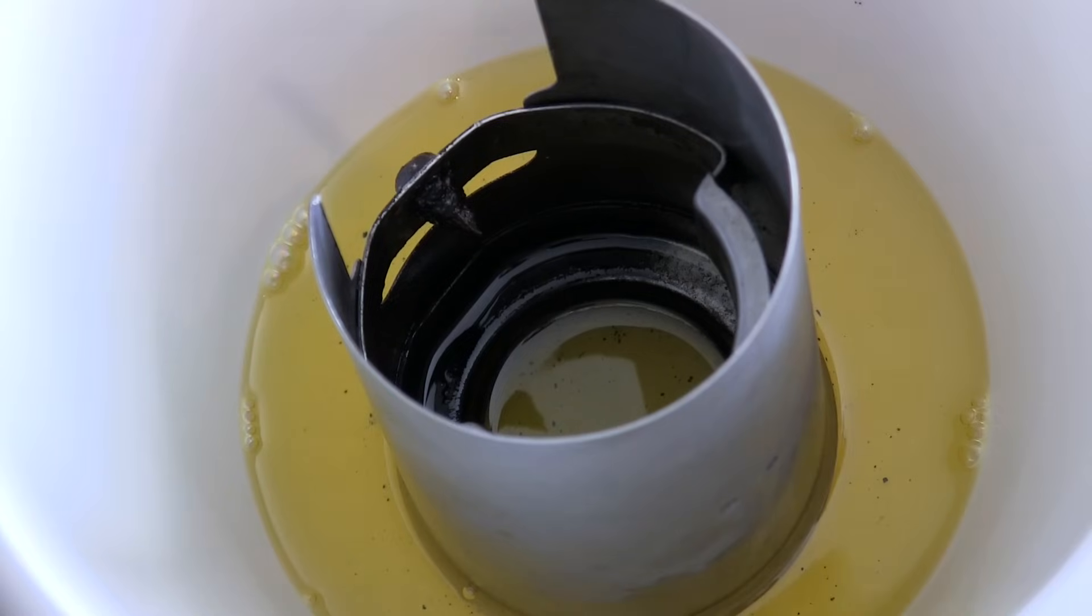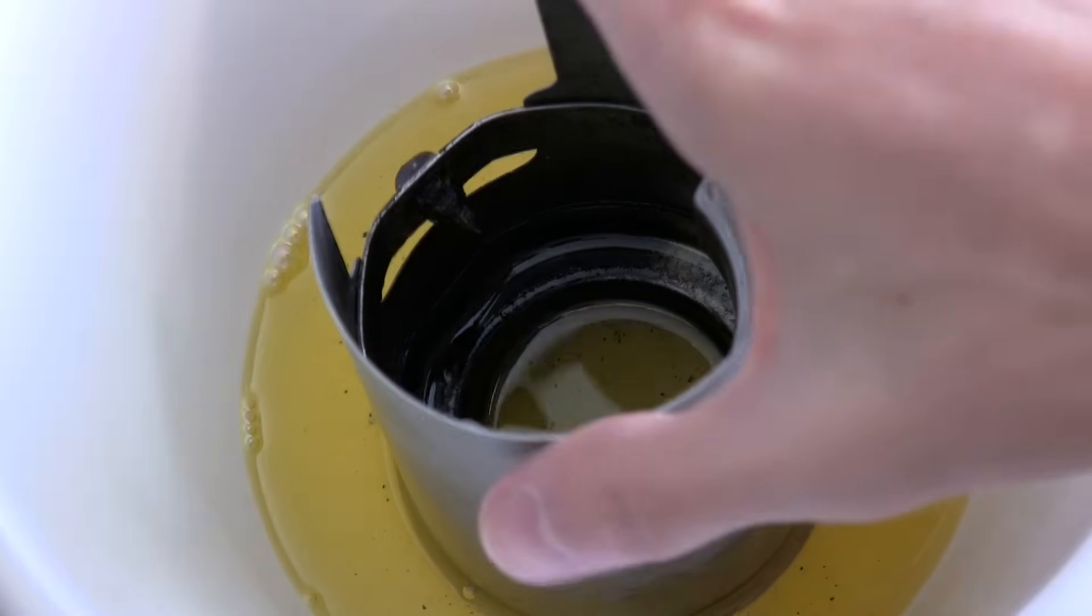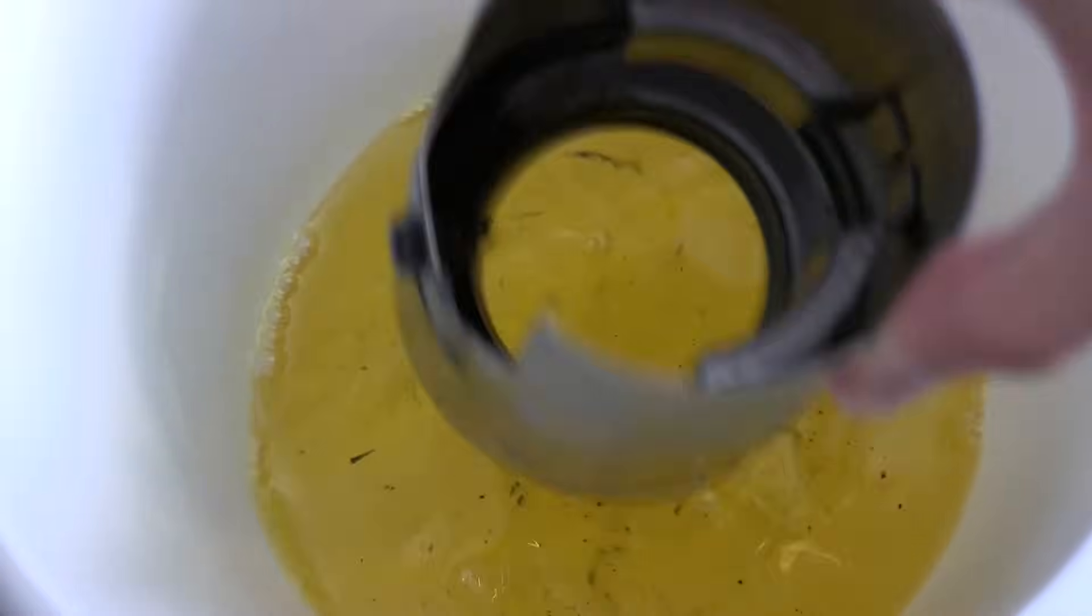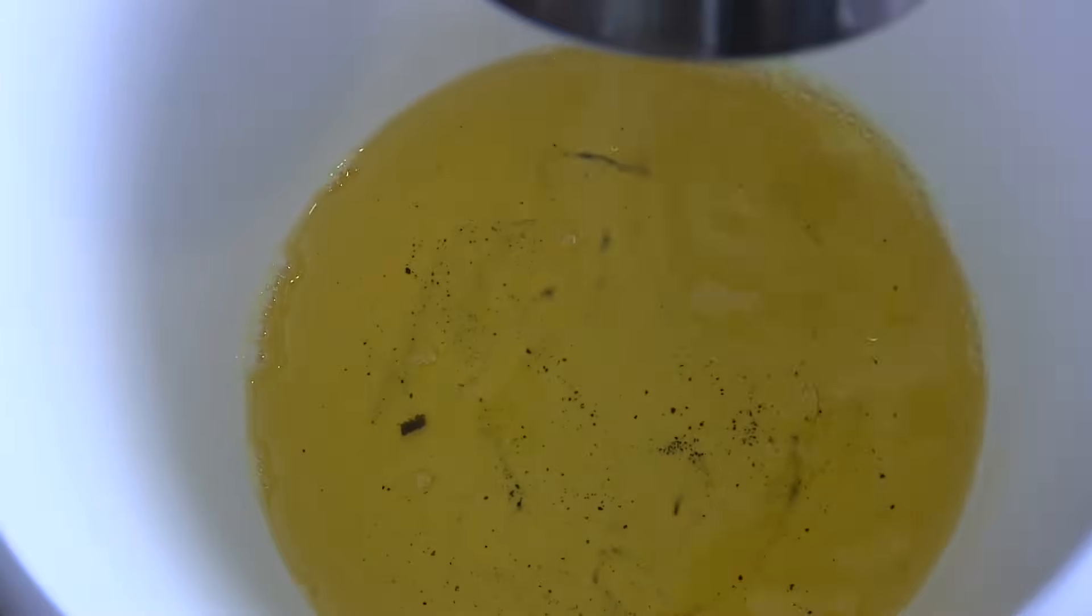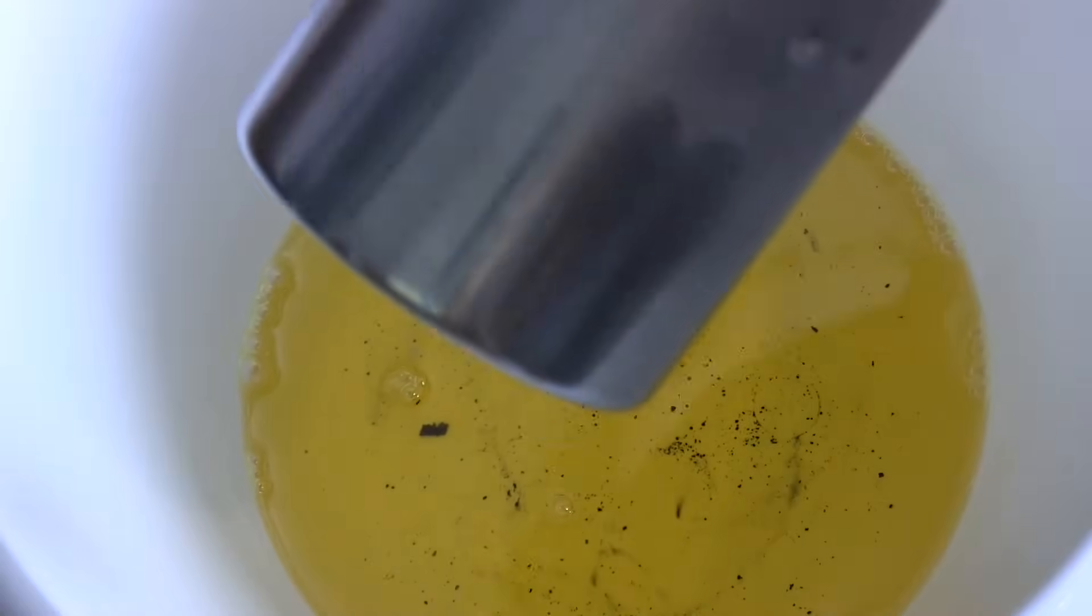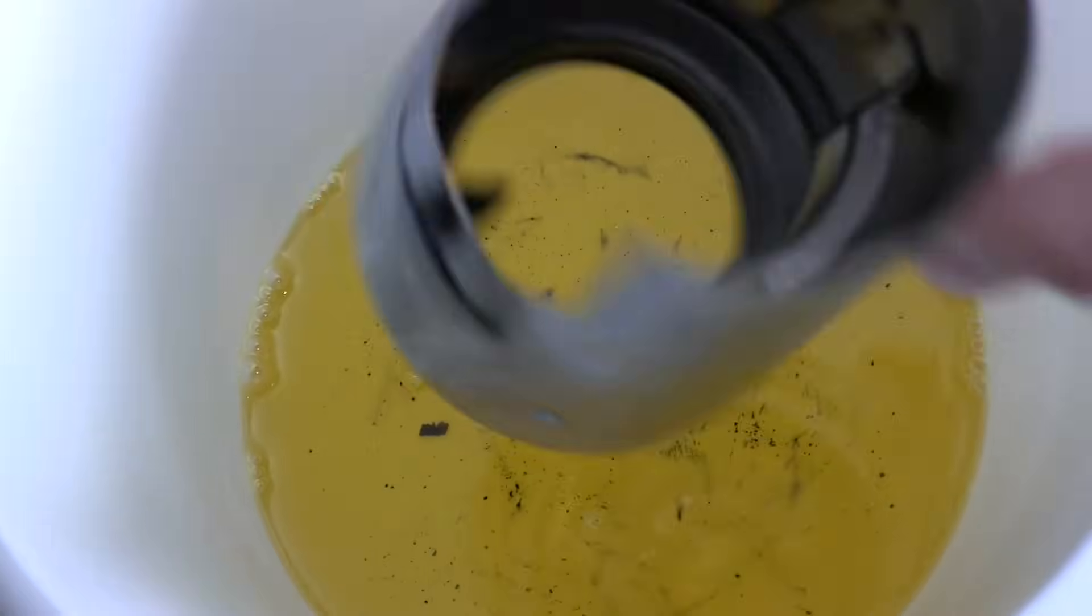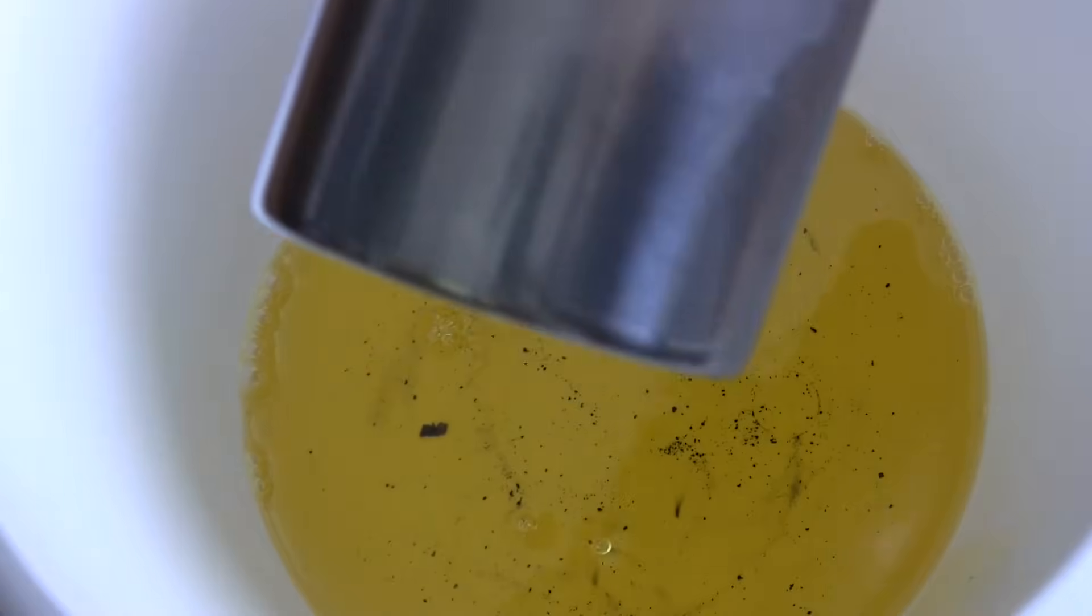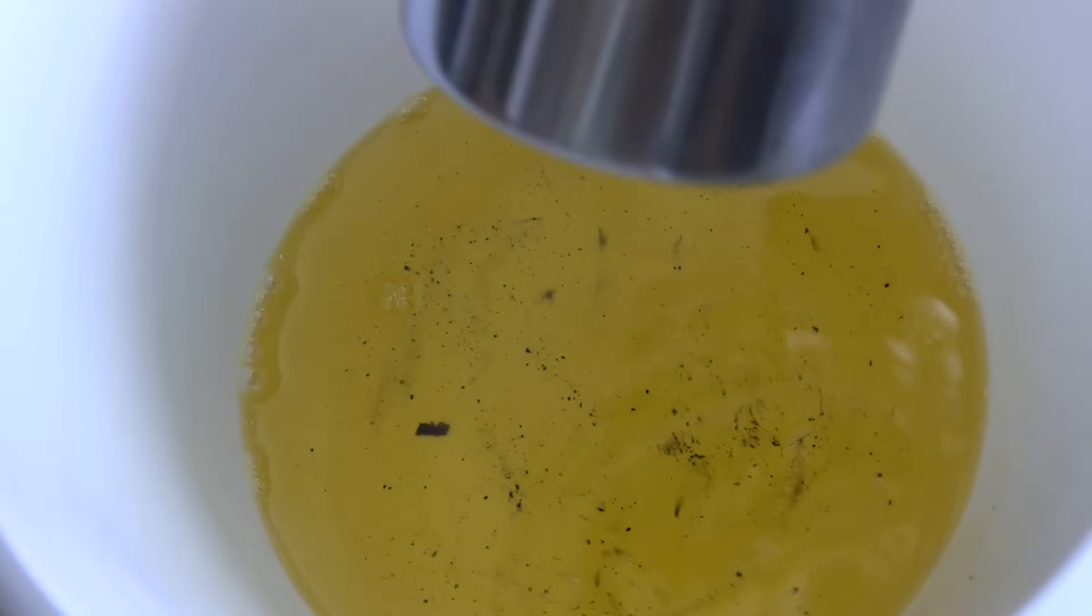So after letting that sit in the Gumout solution for a little while you can see, and I kind of shook it around a little bit in there to coat it well, you can see there's a good amount of carbon which has actually come off. I did go ahead and rinse this in hot water before putting it in the solution and then letting it dry just so that anything loose on it would come off in the water rather than in this solution.